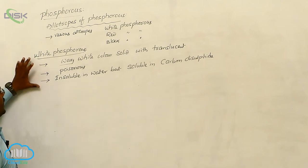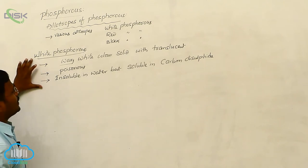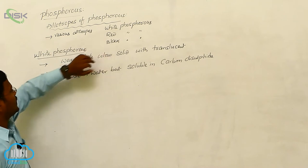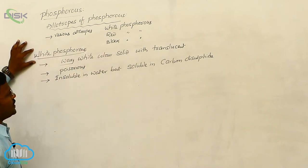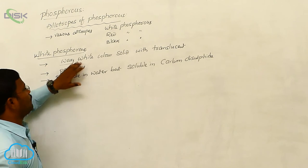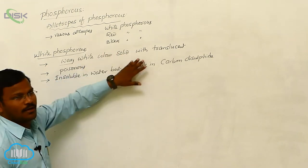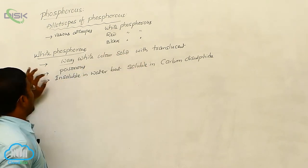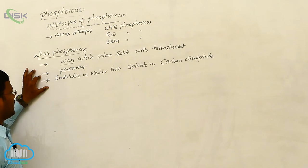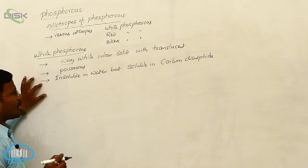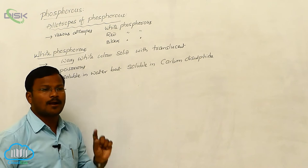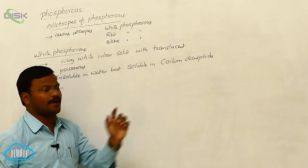White phosphorus is the most important among these three allotropes. It is a translucent white waxy solid, poisonous in nature, insoluble in water but soluble in carbon disulphide.